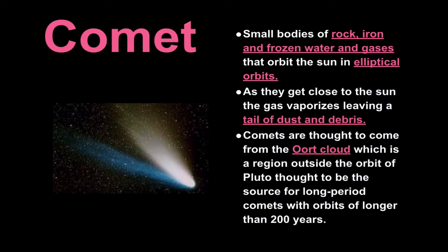Comets, nothing more than small bodies of rock, iron, and frozen water gases that orbit the sun. Highly elliptical orbits. They get very close to the sun and what ends up happening is that they vaporize.